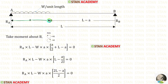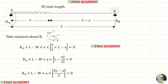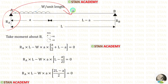If this distance is A, this distance should be L minus A. Let us find the reaction RA. For that, I am going to take moment about B. In this case we are moving towards the right hand side, so clockwise will be positive and anti-clockwise will be negative. RA is acting in the clockwise direction, so it will be positive and the distance is L. So, RA into L.